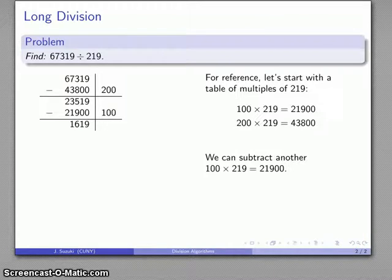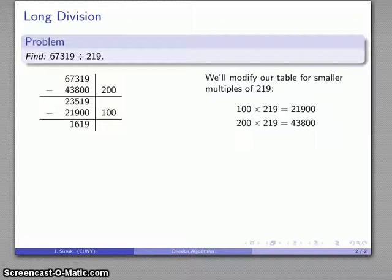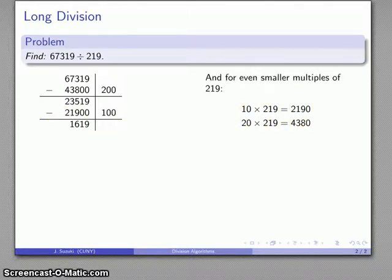Here's something useful: I've already done this work, so I can modify my table for smaller multiples of 219. The extra zeros just scale things up, so I can drop them to get smaller multiples. Notice that even 10 times 219 is already more than I have left over, so I need to look at even smaller multiples.